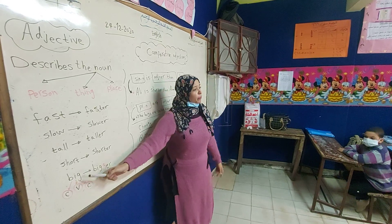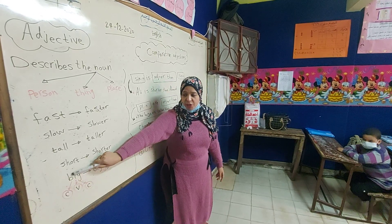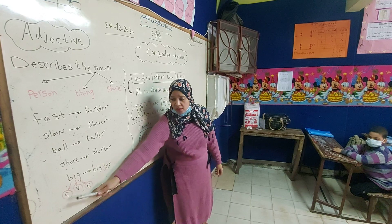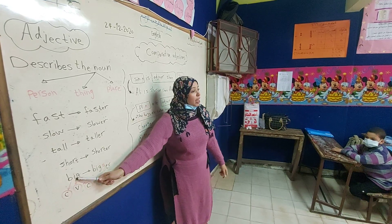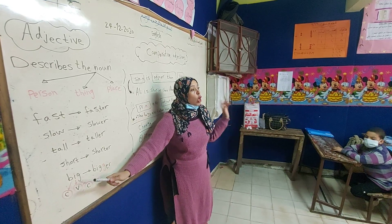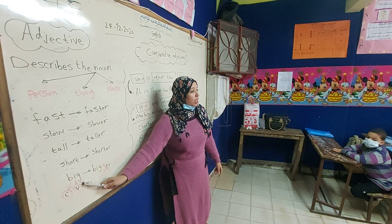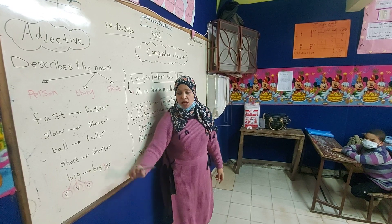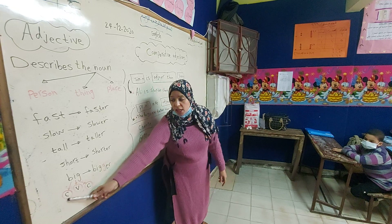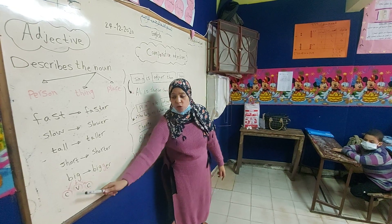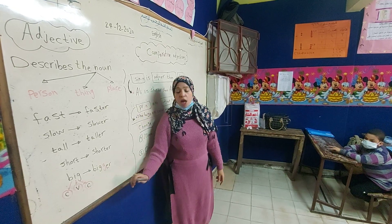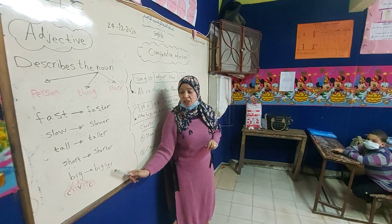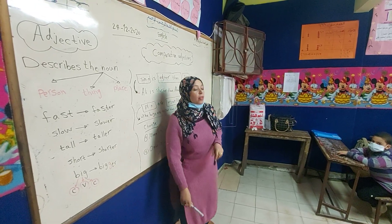Look at the adjective 'big.' The first letter B is a consonant, I is a vowel, G is a consonant. So the pattern is consonant-vowel-consonant, or C-V-C. When the adjective follows this pattern, I double the final consonant before adding '-er.' Okay.